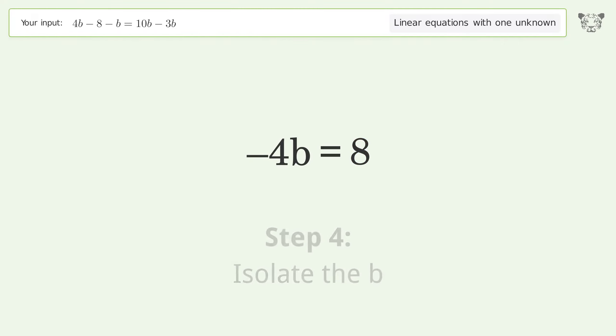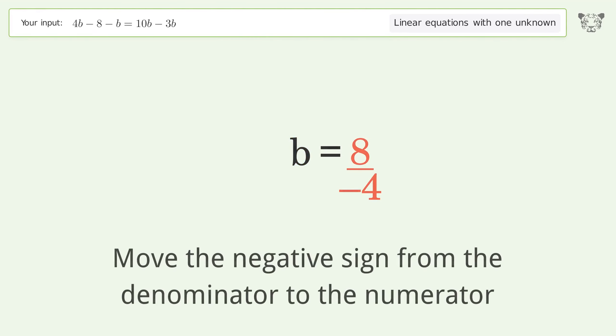Isolate the b. Divide both sides by negative 4, cancel out the negatives, simplify the fraction, and move the negative sign from the denominator to the numerator.